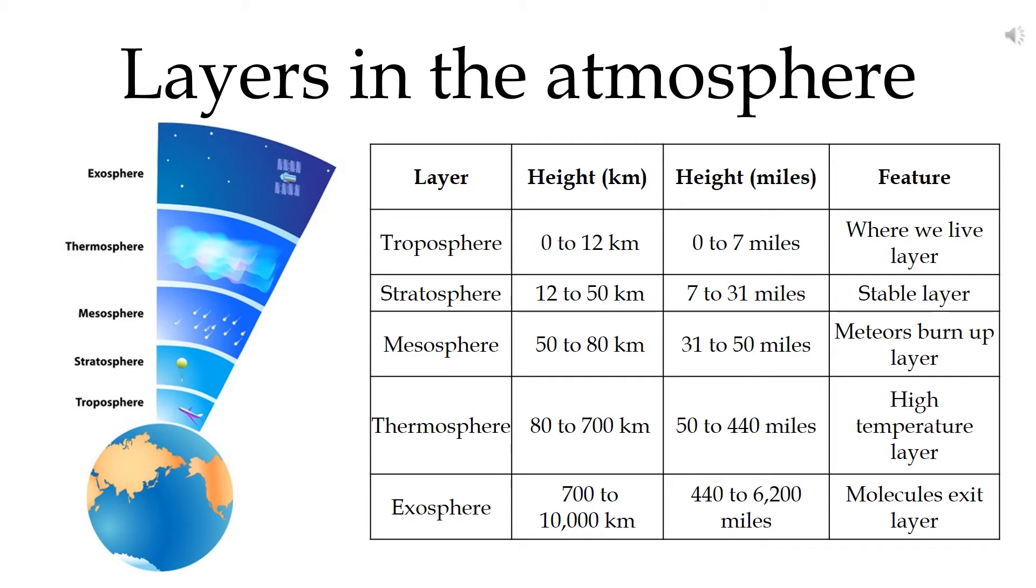There are five layers of the atmosphere. The troposphere is the layer closest to the surface, which is the one we live in, and almost all weather takes place in this layer.